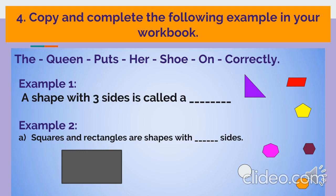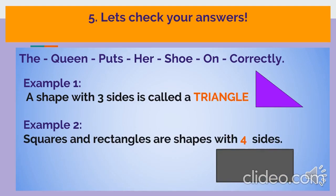A shape with three sides is called a what? Here's a picture with a shape with three sides. Example 2: Squares and rectangles are shapes with how many sides? Let's check if you got your answers correct. A shape with three sides is called a triangle. Well done. Squares and rectangles are shapes with four sides. Very good.